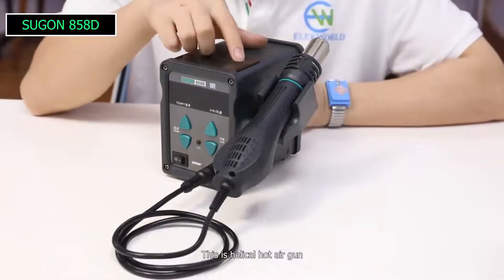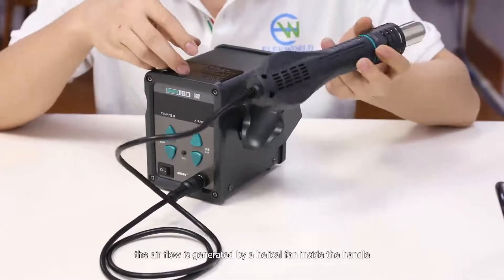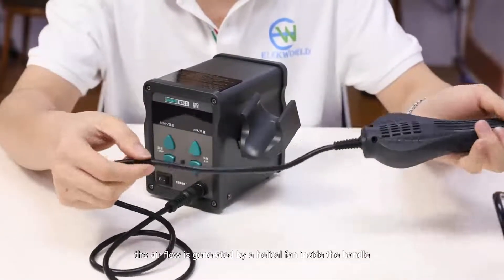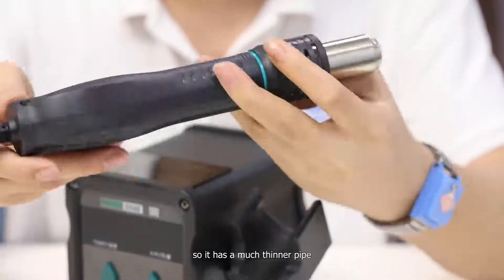This is a helical hot air gun. Different from vertical hot air gun, the airflow is generated by a helical fan inside the handle, then delivered to nozzle. So it has a much thinner pipe.